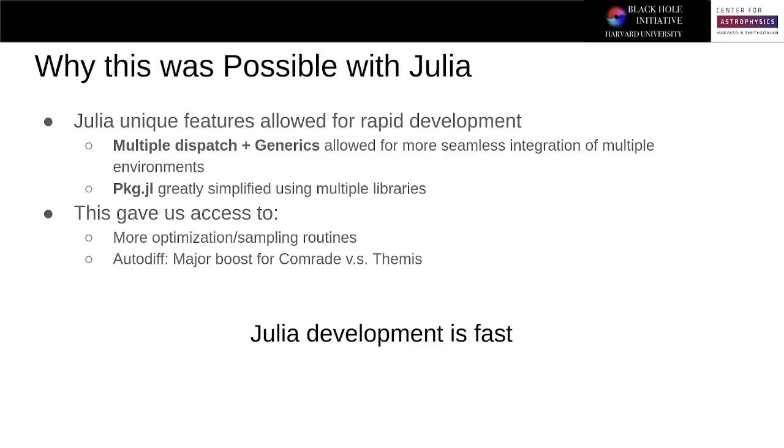However, just as important was the use of Julia's native package manager, Pkg.jl. This greatly simplified us using multiple libraries, which had been a major headache for Themis in the past. This gave us access to a large number of optimization and sampling schemes and was the main reason why we were able to leverage auto-differentiation in Comrade versus finite differentiation in Themis, which is the major speed boost we have.